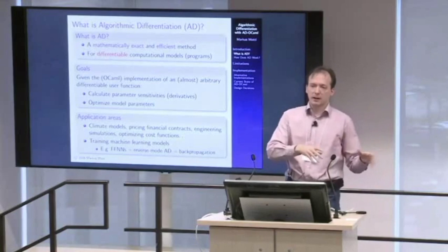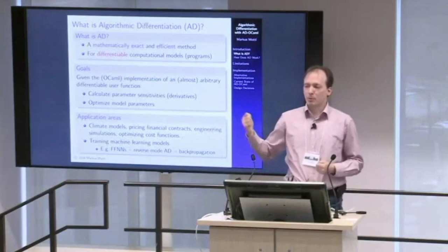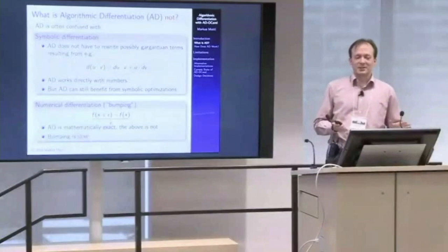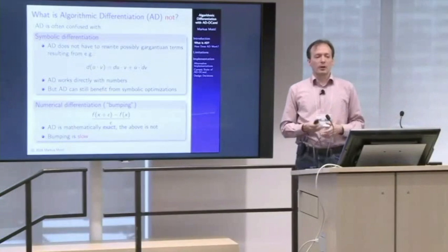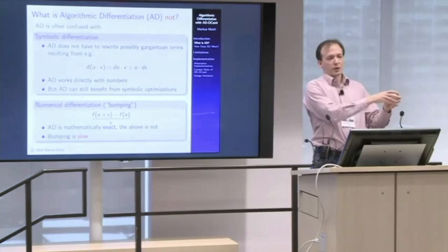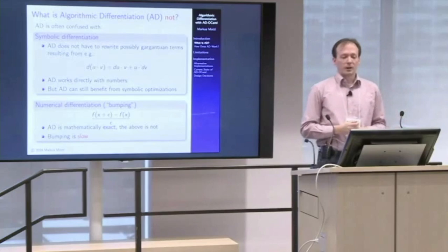Taking the example of feed-forward neural networks plus reverse mode algorithmic differentiation gives you backpropagation. This famous algorithm is actually just a special case of something much more general. To contrast: algorithmic differentiation is not symbolic differentiation. Many functional programmers have written term structures with multiplication, plus, minus, and transforms to their derivatives — but that's not what's going on here.